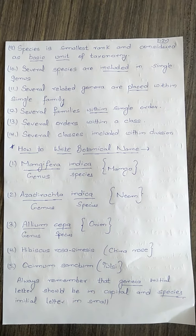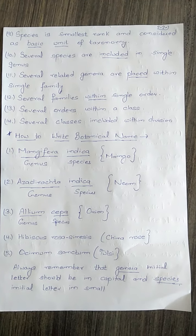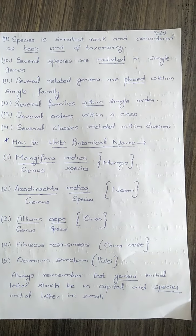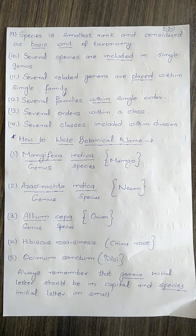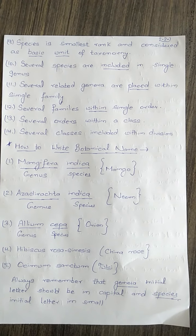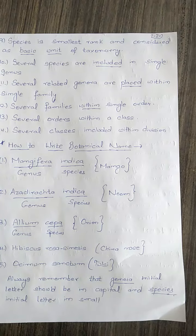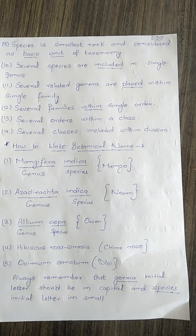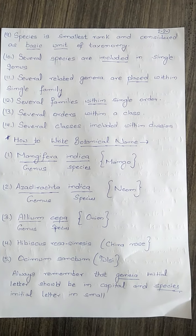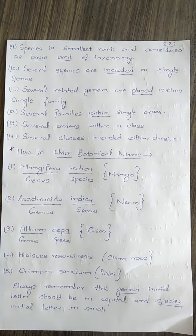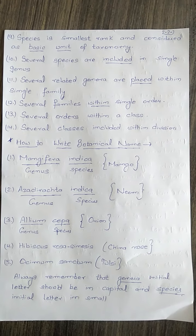Now, how to write a botanical name. For example, the mango botanical name is Mangifera indica. It must be underlined. The first letter of the genus is written in capital — Mangifera — and the first letter of the species is written in small — indica.